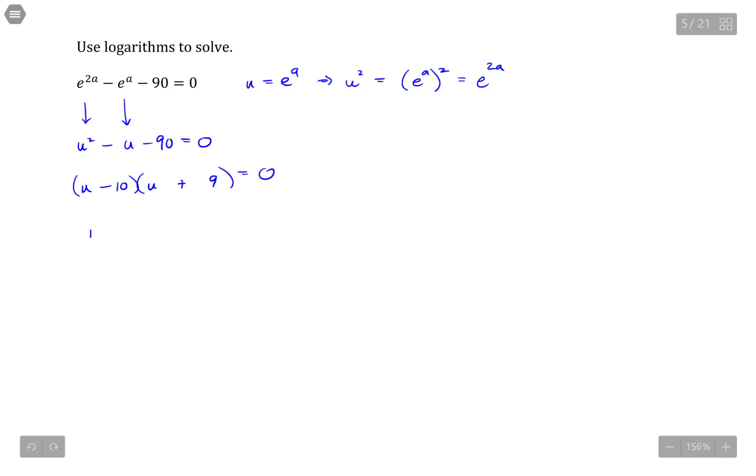So that means I have u minus 10 is equal to 0, and u plus 9 is equal to 0. Or u equals 10, or u equals negative 9.